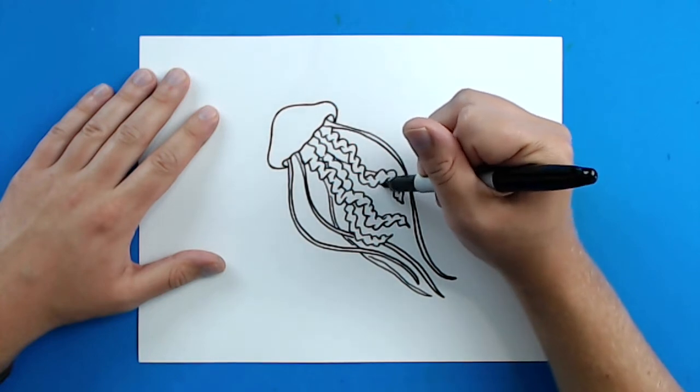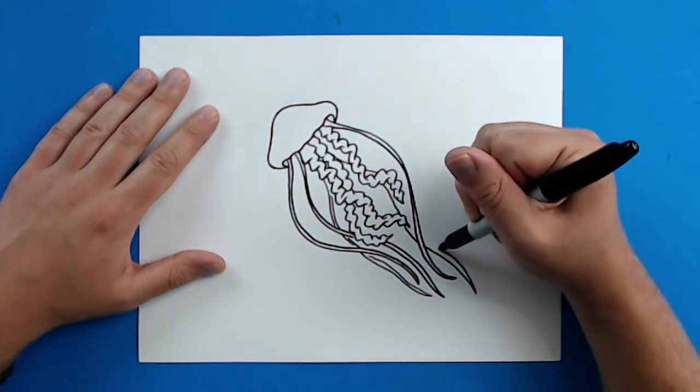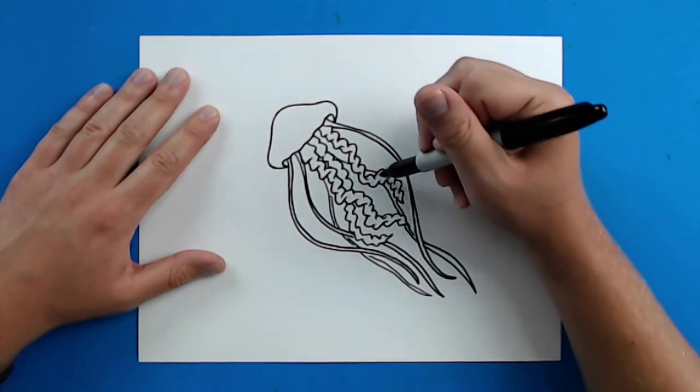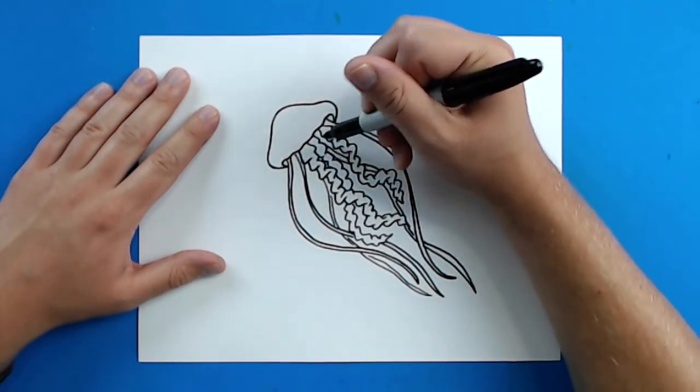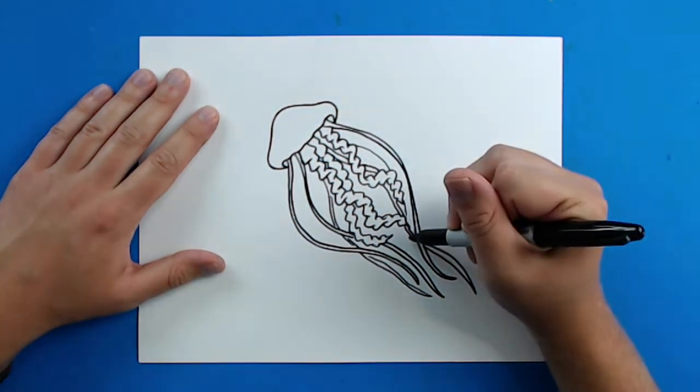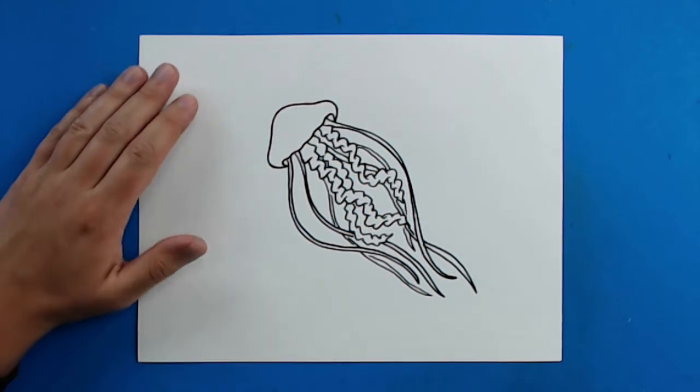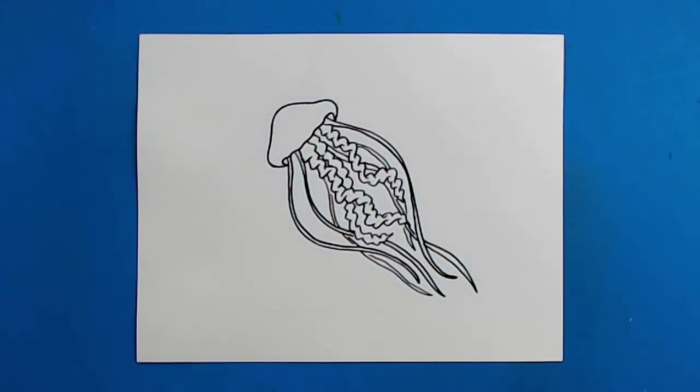And then you just want to keep kind of putting these all around here, make them different lengths, like that. And there you go. There is your drawing of a jellyfish.